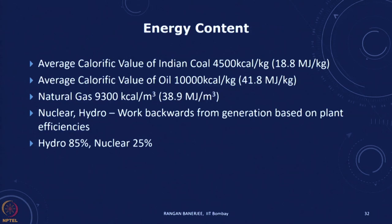Typically when you look at an Indian energy balance, Indian coal has an average energy content lower than international South African or Australian coal. Right now the average may be of the order of a little less than 5000 kilocalories per kg — about 4500. You multiply that by 4.18 kilojoules and you get 18.8 megajoules per kg. Oil has a greater calorific value per kg — it is about 41.8 megajoules per kg — and natural gas is of that same order of magnitude.